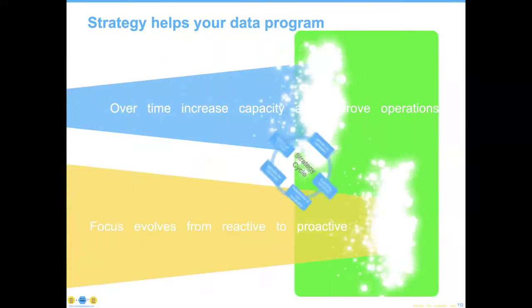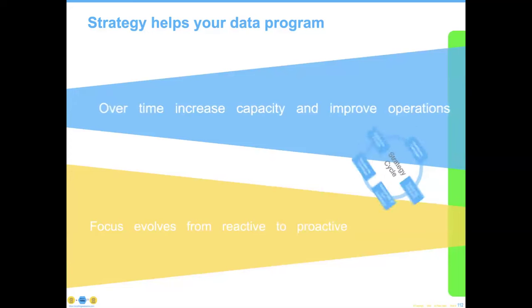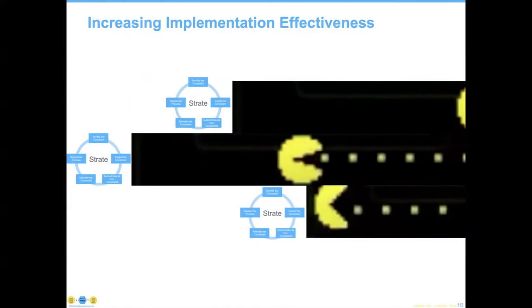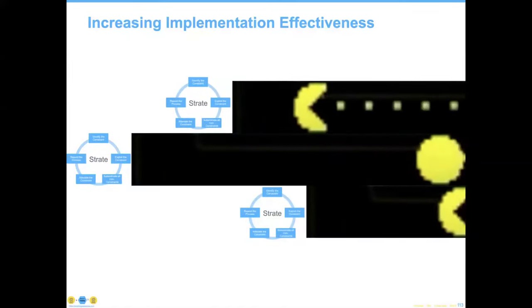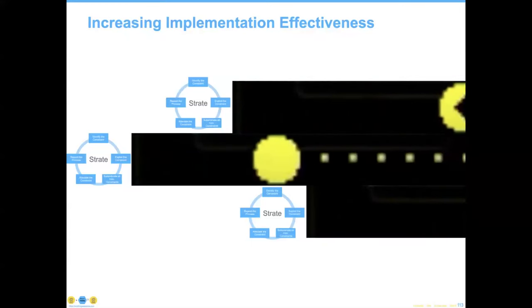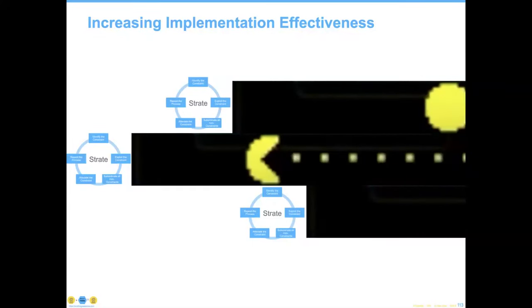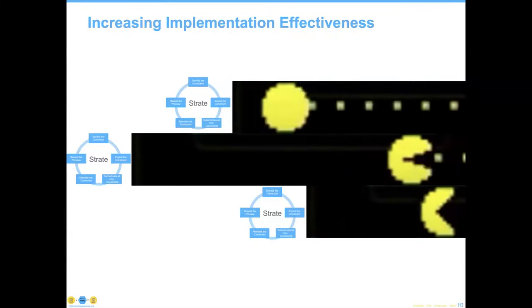Strategy helps your data program over time increase capacity by cycling through the theory of constraints, plan, do, check, act — doing small things that chip away but achieve specific goals. Eventually, as your organization builds up its data governance organization and data strategy, you can graduate to a multi-pronged approach: one strategic initiative, but also setting up numbers two and three if that becomes very useful for your organization. All of these pieces require the organization to achieve very, very well with what it's trying to do, and you're going to get that better result if you're able to take the full-time efforts of some people.